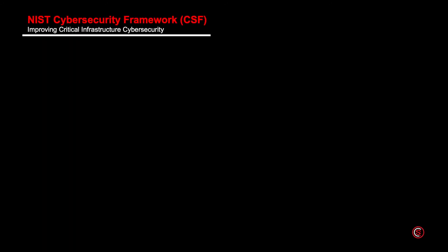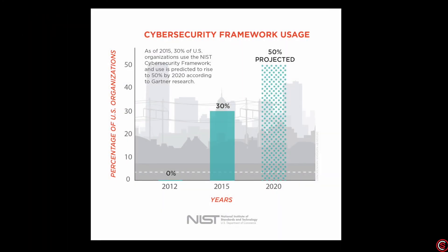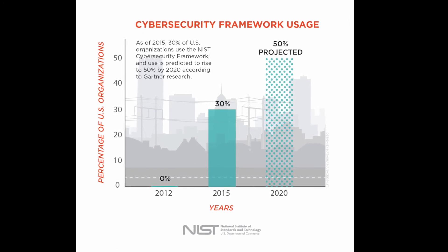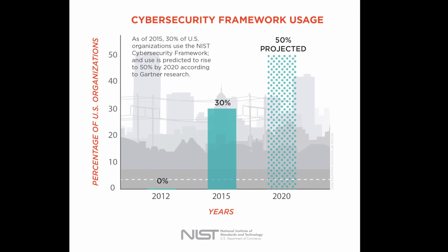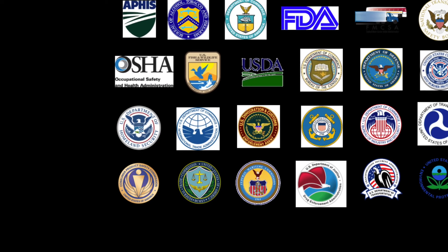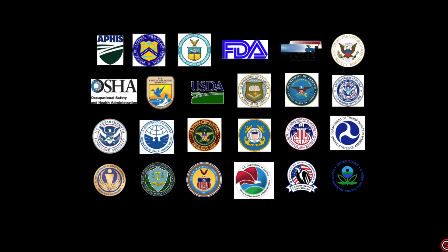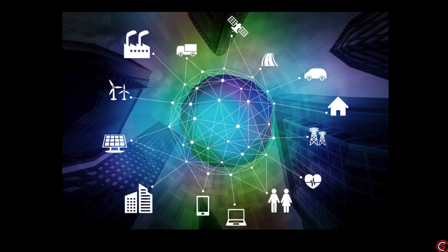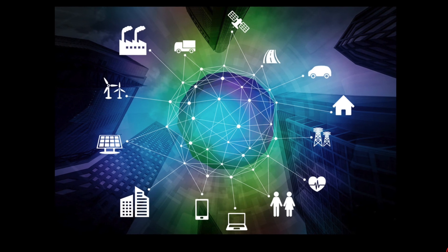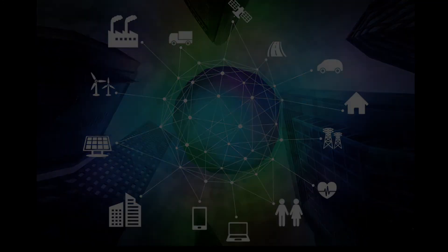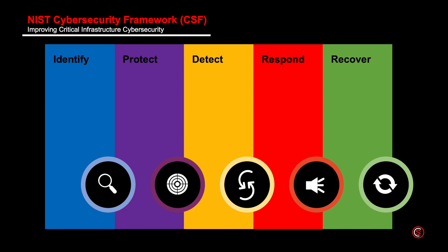The second NIST framework is the Cyber Security Framework, also known as CSF. Originally intended for the critical infrastructure sector, according to Gartner, CSF is now used by approximately 30 percent of U.S. private sector organizations and is projected to reach 50 percent by end of 2020. Since 2016, U.S. federal agencies have referred to CSF as a standard for managing and reducing cyber security risk. It is increasingly considered a de facto cyber security standard and is designed to be size, sector, and country agnostic. The framework comprises five core functions.